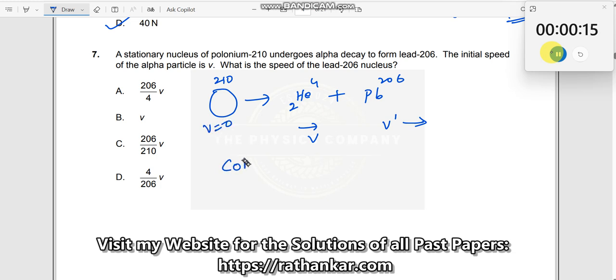Now what you can do is apply conservation of momentum. When you apply conservation of momentum, what is the momentum of this particle? Zero. Initial momentum equals final momentum. This moved with velocity v.